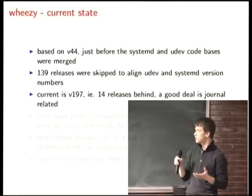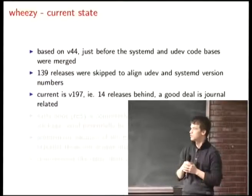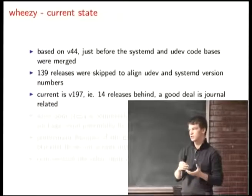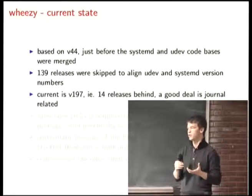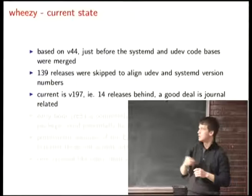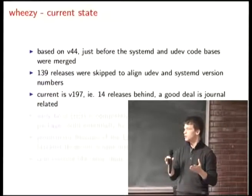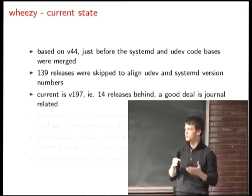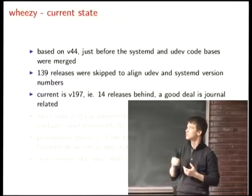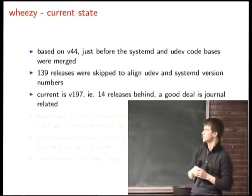It's a pretty solid release. What's mostly missing in version 44 is that the journal is not as powerful and capable. We were freezing half a year ago, before the udev/systemd merge, so that's why we ended up with that version.